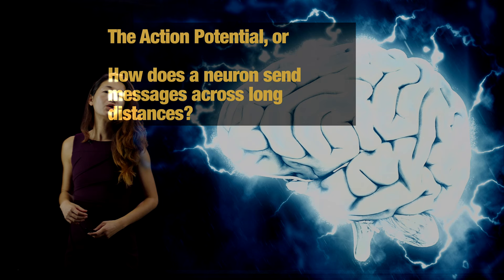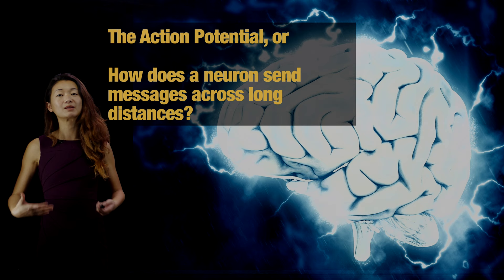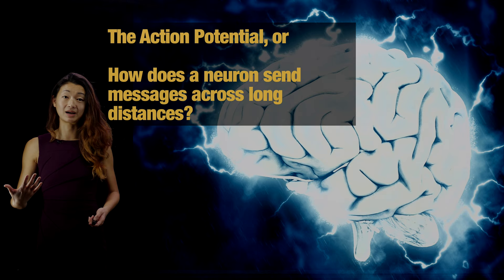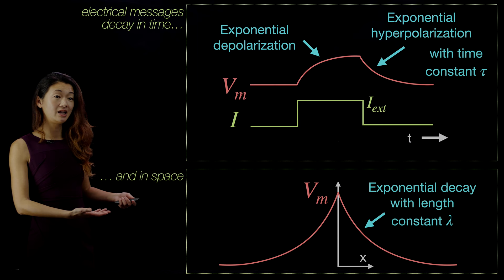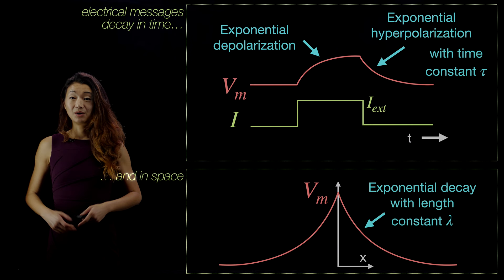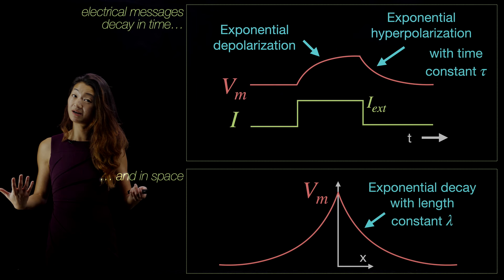To review what we talked about in the last couple of segments: according to what we know about the passive and active properties of neurons, whenever something changes — like you inject current of some kind — the cell responds by exponential depolarization and hyperpolarization, and also exponential decay in space. Whenever something changes, the cell certainly does respond. It can respond quickly, it can respond slowly, but then that response decays in time and in space exponentially.